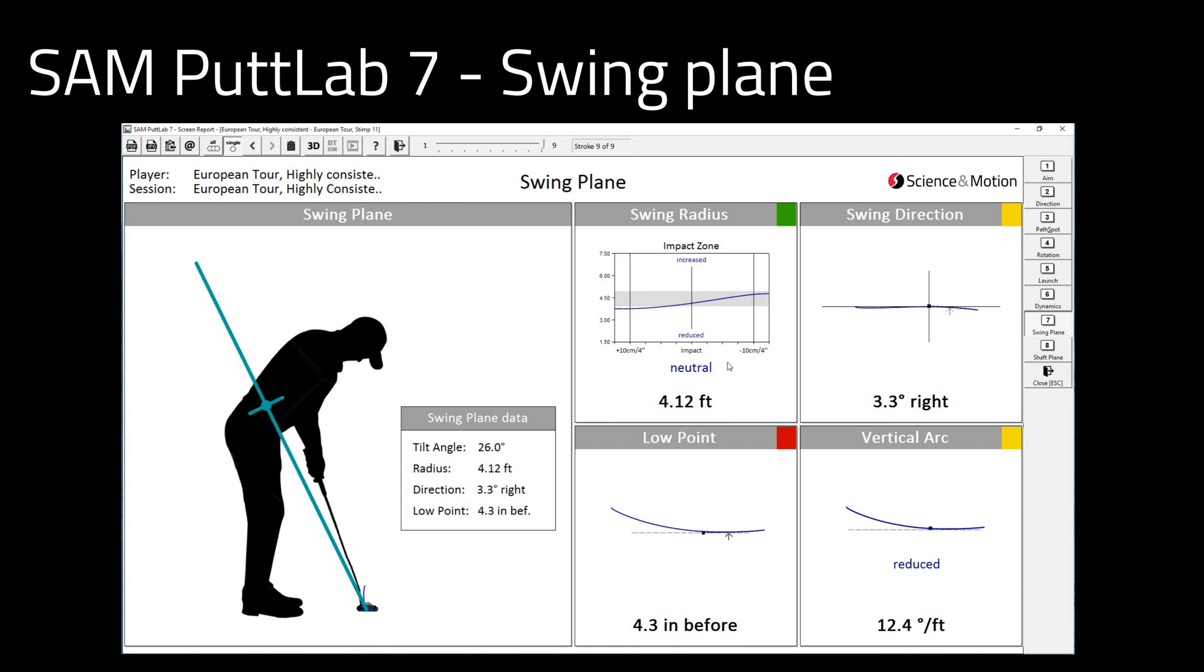The swing plane radius is the center of your swing plane, and for this putt is 4.12 feet, which is rated as being neutral. The swing radius is higher at the beginning of the impact zone and then decreases throughout the impact zone.